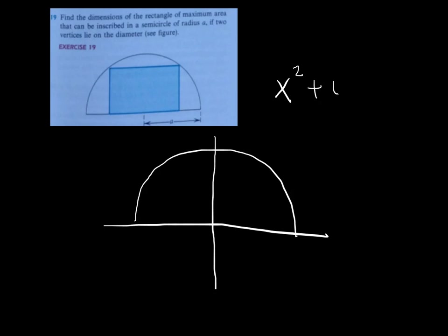To even get started on this problem, you've got to know, got to remember from pre-calculus, the equation for a circle of radius A. Okay, it's x squared plus y squared equals A squared.